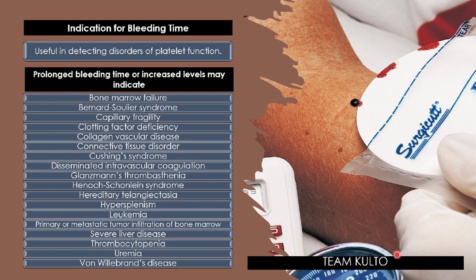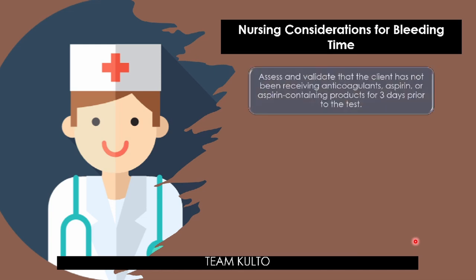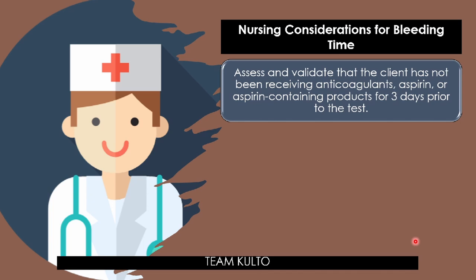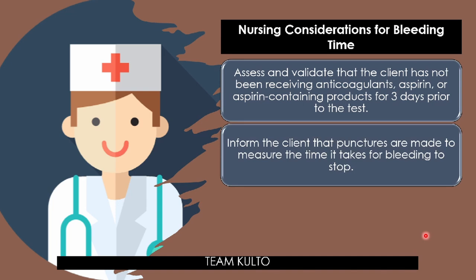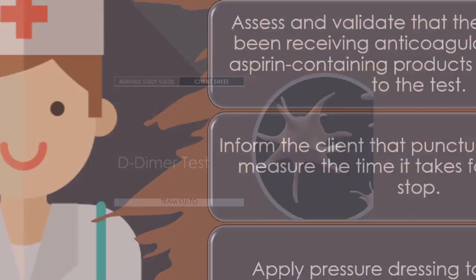Nursing considerations for bleeding time: assess and validate that the client has not been receiving anticoagulants, aspirin, or aspirin-containing products for three days prior to the test — this prevents false positive results. Inform the client that punctures are made to measure the time it takes for bleeding to stop. Apply a pressure dressing to clients with bleeding tendencies after the procedure.